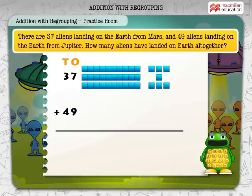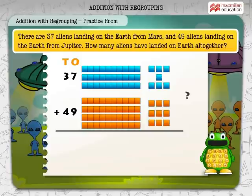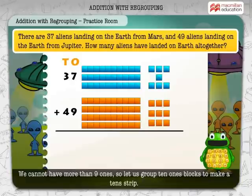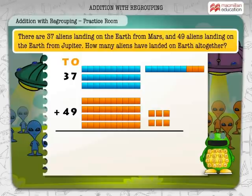How many tens and ones are there in 49? Yes, 49 has 4 tens and 9 ones. Add the ones. Did you get 16 ones? You are correct. We cannot have more than 9 ones, so let us group 10 ones blocks to make a tens strip. We now have 8 tens strips and 6 ones blocks. So, 37 plus 49 is equal to 86.